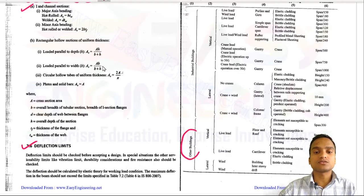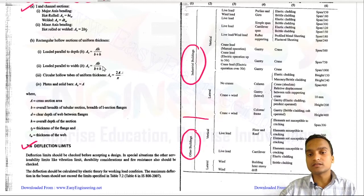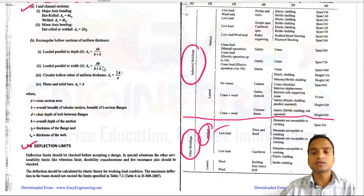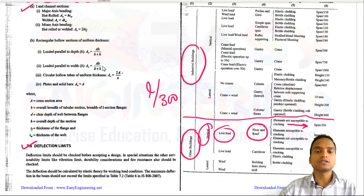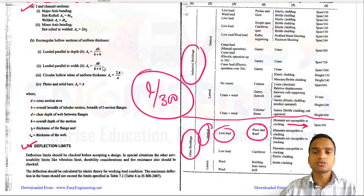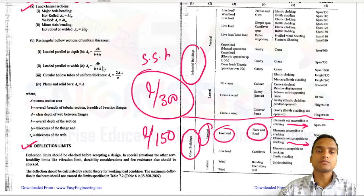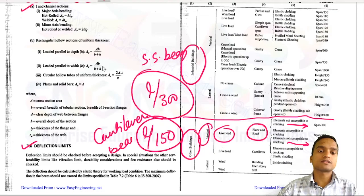For building structures the deflection limit for vertical live load on floor and roof elements not susceptible to cracking is L/300, where L is the span length. This is the most common deflection limit in design problems. For cantilever beams the limit is L/150. This deflection check is done at the end of the problem.